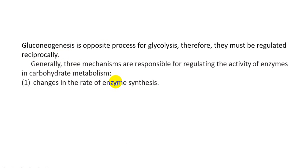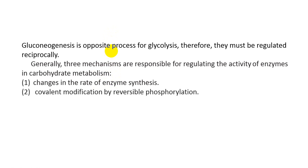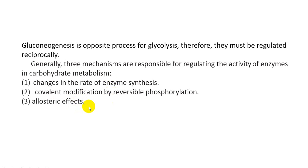The second mechanism is covalent modification by reversible phosphorylation. There are many phosphorylation steps in glycolysis and gluconeogenesis, as well as other processes inside the human body. Phosphorylation steps play a very important role in carbohydrate metabolism. The third mechanism involves allosteric enzymes — there are many allosteric enzymes that play important roles in gluconeogenesis and glycolysis.